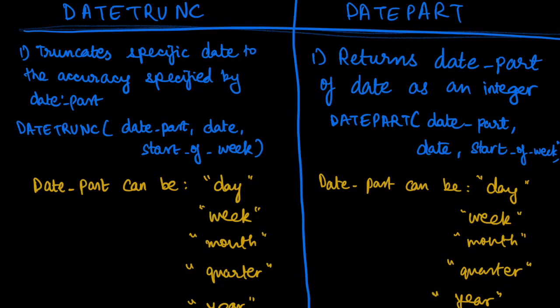When defining these functions, the date part can be specified as day, week, month, quarter, or year. The syntax for DATE_TRUNC is: date_trunc(date_part, date, [start_of_week]), where start_of_week is optional. The DATE_PART syntax is: date_part(date_part, date, [start_of_week]), where date_part can also be day, week, month, quarter, or year.